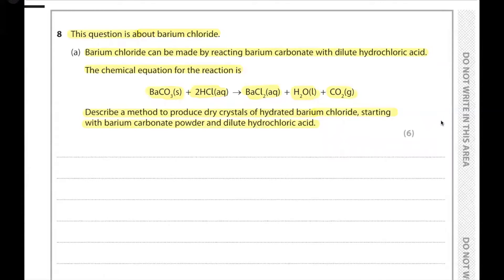We will add barium carbonate to the hydrochloric acid one spatula at a time until the barium carbonate is in excess. The reason we add it one spatula at a time is because when barium carbonate touches the hydrochloric acid, it reacts to produce carbon dioxide gas causing effervescence. Adding too much at once would cause the solution to spill. When barium carbonate is in excess, all the hydrochloric acid has reacted. We then filter off the excess barium carbonate and collect the filtrate.